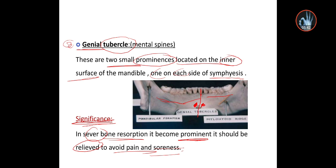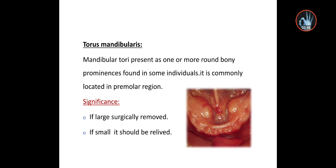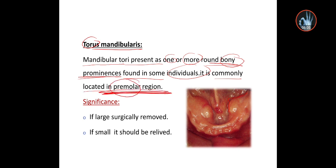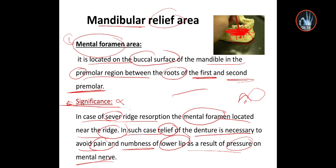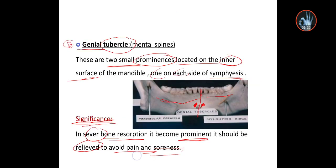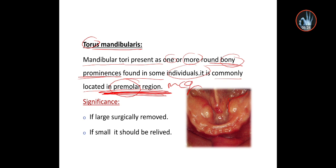The torus mandibularis presents as one or more round bony prominences found on some individuals. It is commonly located on the premolar region — this is an important MCQ point. The torus mandibularis is on the premolar area lingually. Significance: if it is too large, it should be surgically removed; if it is small, relief of the denture is sufficient.